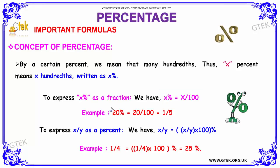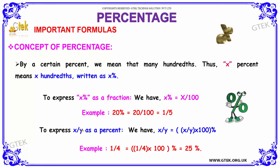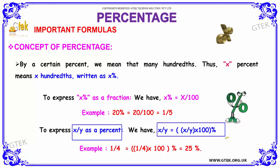Let us consider the example. 20% can be written as a fraction by dividing it by hundred to get 1 by 5. To express x by y as a percentage, that is, a fraction expressed as a percentage, we have the format: x by y is equal to x by y into hundred, the whole percentage.